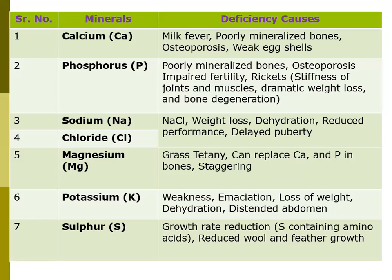Regarding the importance of sodium and chloride — they are present in salt (NaCl) — their deficiency may cause weight loss, dehydration, reduced performance, and delayed puberty. This not only affects the productive performance of animals but also causes delayed puberty, which is a direct indicator of the reproductive performance of animals.